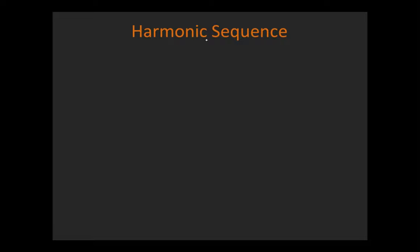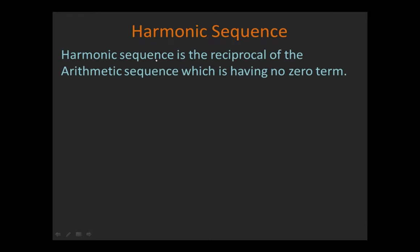In this video we are studying harmonic sequence. A harmonic sequence is the reciprocal of an arithmetic sequence. However, if the arithmetic sequence has a zero term, then its harmonic sequence will not be possible. So it is required that the arithmetic sequence has no zero term.